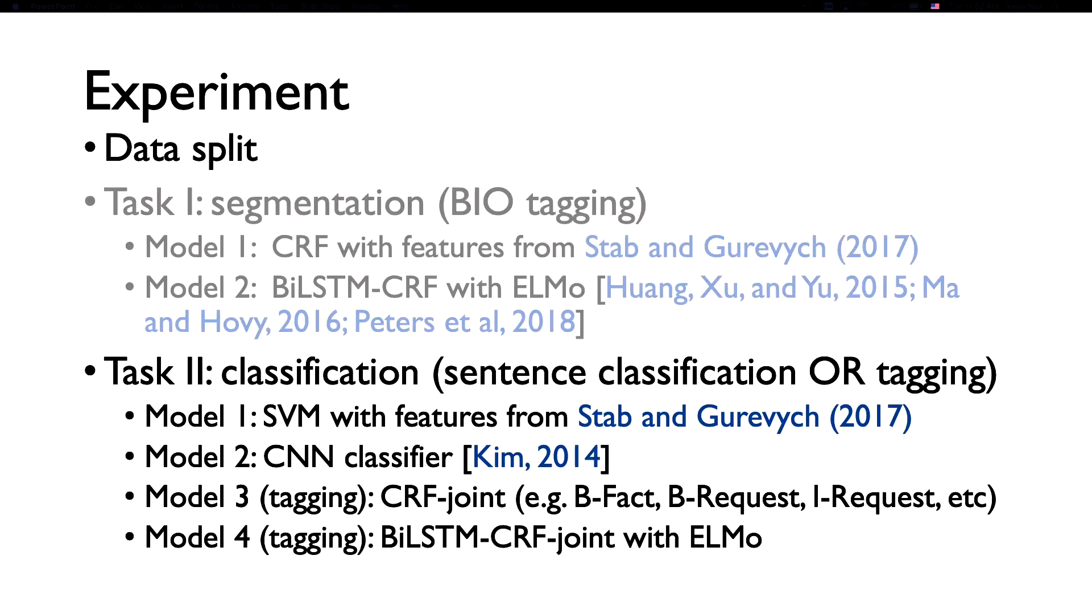For the second task, we could consider two different paradigms. Either we treat it as sentence classification task or also a sequence tagging task. For the first paradigm, we use a feature-based SVM model as well as a convolutional neural network classifier. For the second paradigm, similarly we consider a CRF model or a BiLSTM CRF model with ELMo. But we slightly modify the labels for BIO tagging, such as B for fact, I for fact, et cetera.